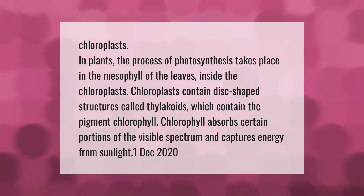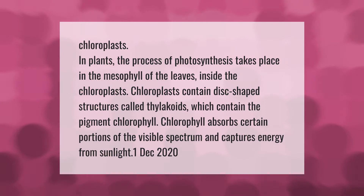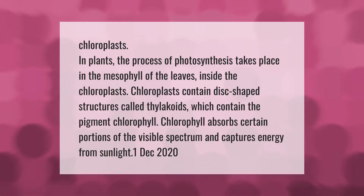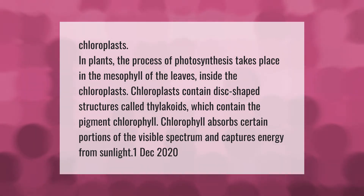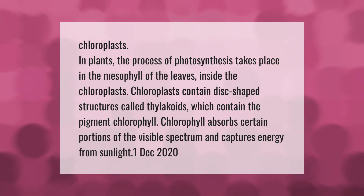In plants, the process of photosynthesis takes place in the mesophyll of the leaves, inside the chloroplasts. Chloroplasts contain disc-shaped structures called thylakoids, which contain the pigment chlorophyll. Chlorophyll absorbs certain portions of the visible spectrum and captures energy from sunlight.